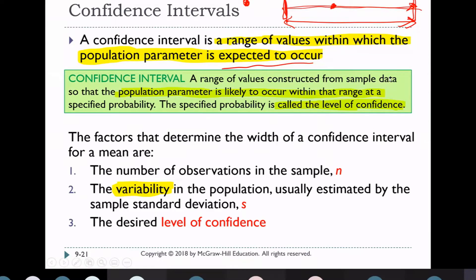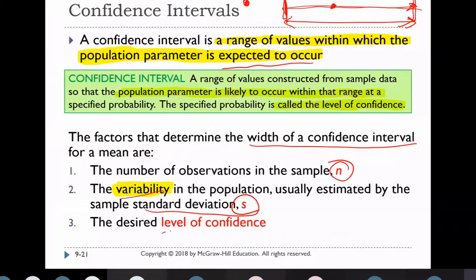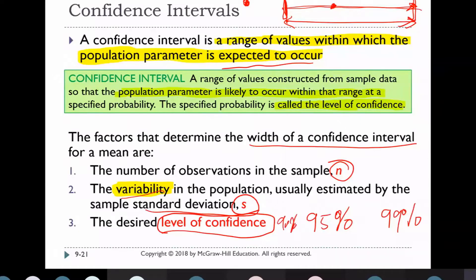What is a confidence interval? There are factors that determine the width of a confidence interval: the number of observations or sample size, and variability in the population — that is, the standard deviation — which is a key factor in finding the interval. Additionally, the desired level of confidence matters, for example whether you want 95%, 99%, or 90% confidence.